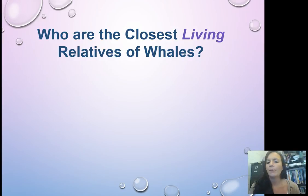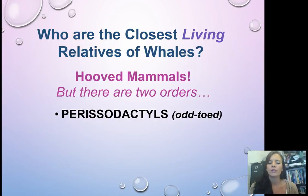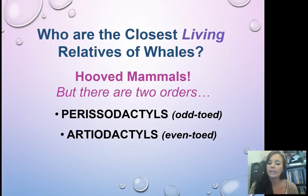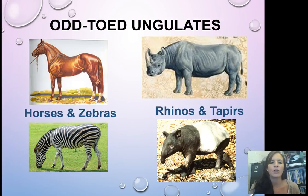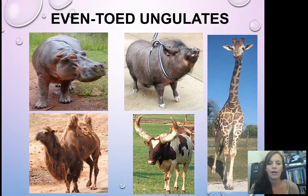So the problem is, who are the closest living relatives of whales that live on land? Hooved mammals are the answer, but there are two orders: odd-toed and even-toed. Odd-toed ones are things like horses, zebras, rhinos, and tapirs. Even-toed ones are the things we tend to think of more — pigs, hippos, camels, and giraffes.